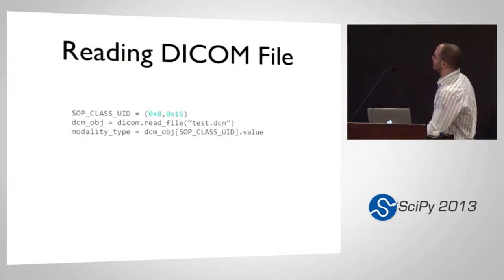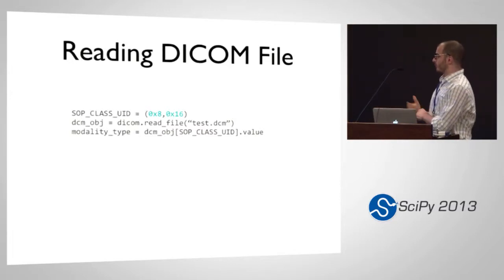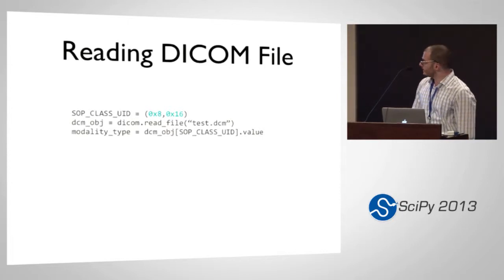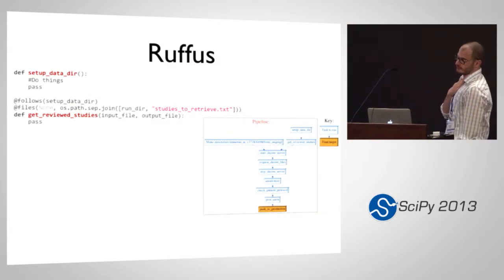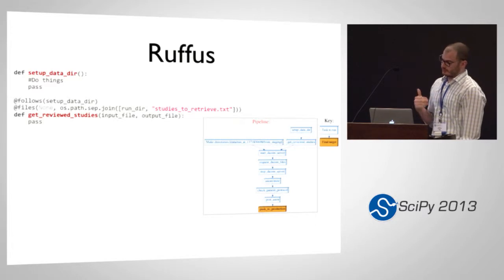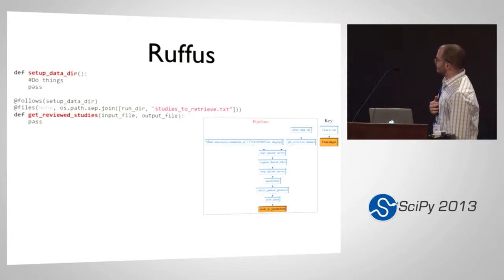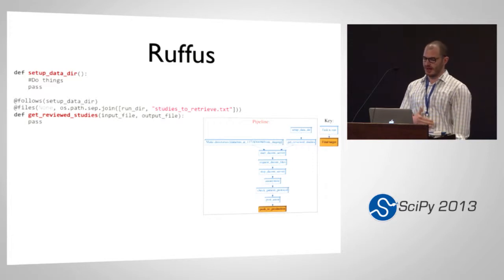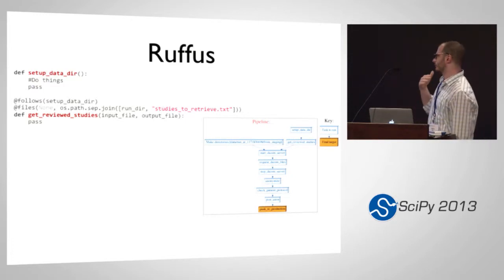There's an example of how easy Python makes working with DICOM files. If you just want to get an attribute, you import PyDICOM, read the file, and then the whole file becomes a dictionary — the pixel data is available, here we're trying to get the modality out. The other large library that's a big component of this is Rufus. It's a framework for doing pipelines in Python that allows you to annotate functions with their dependencies. Here you see a setup data directory function, and the next function is annotated saying it must follow that function and has certain dependencies — if this function finishes completely, it will have produced a studies-to-retrieve file, and from that Rufus can figure out exactly what needs to be done.